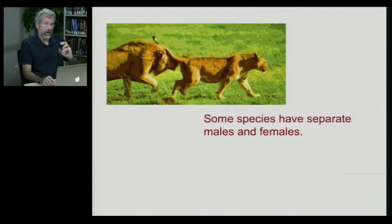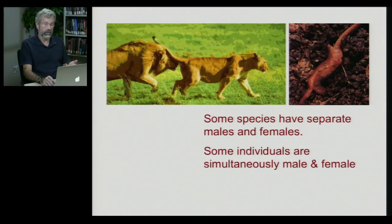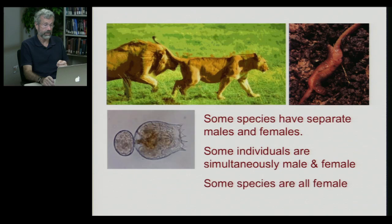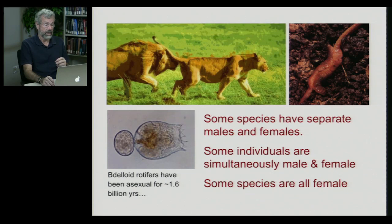There's enormous diversity in sexuality across different organisms. A number of different species have separate males and females. There are other organisms that are both male and female at the same time, like earthworms. And there are other lineages where only females exist — the entire species consists of nothing but females. These bdelloid rotifers have been asexual for over one and a half billion years.